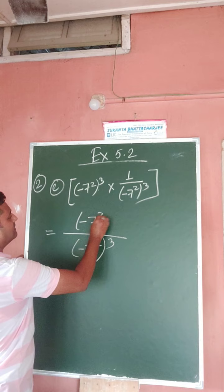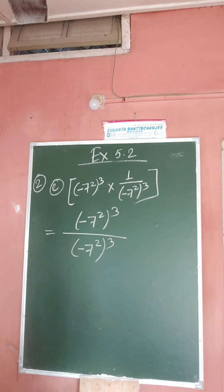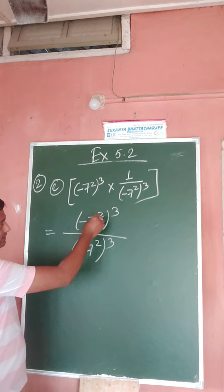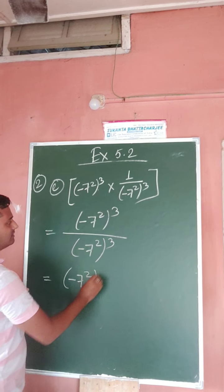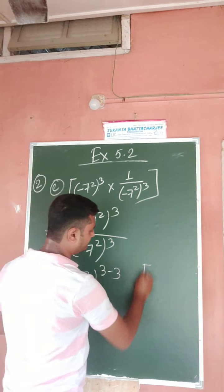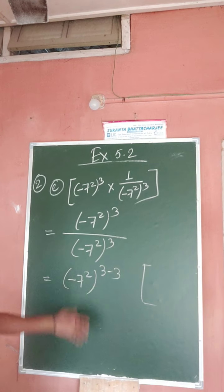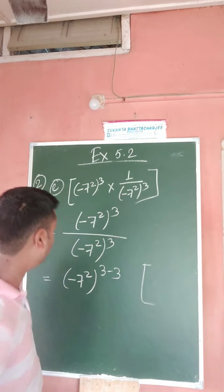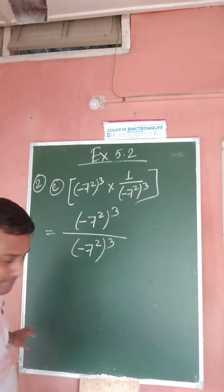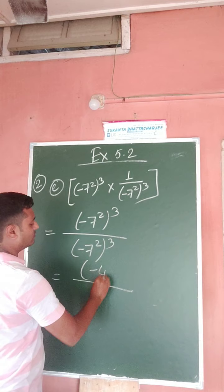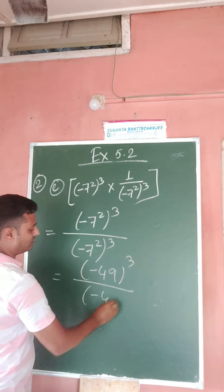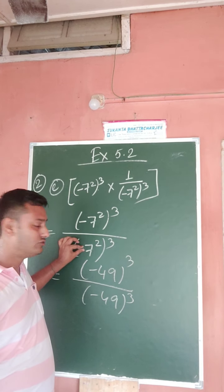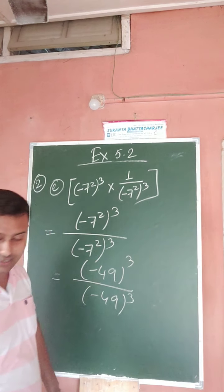Again, this one is: a to the power m divided by a to the power m. In this case both are equal, so a to the power m. You can write minus 7 square, 3 minus 3, or minus 7 square. You can also write 49 or minus 49. So directly you can write, or you can actually solve this. That means minus 7 square means minus 49, whole cube, and minus 49 whole cube.